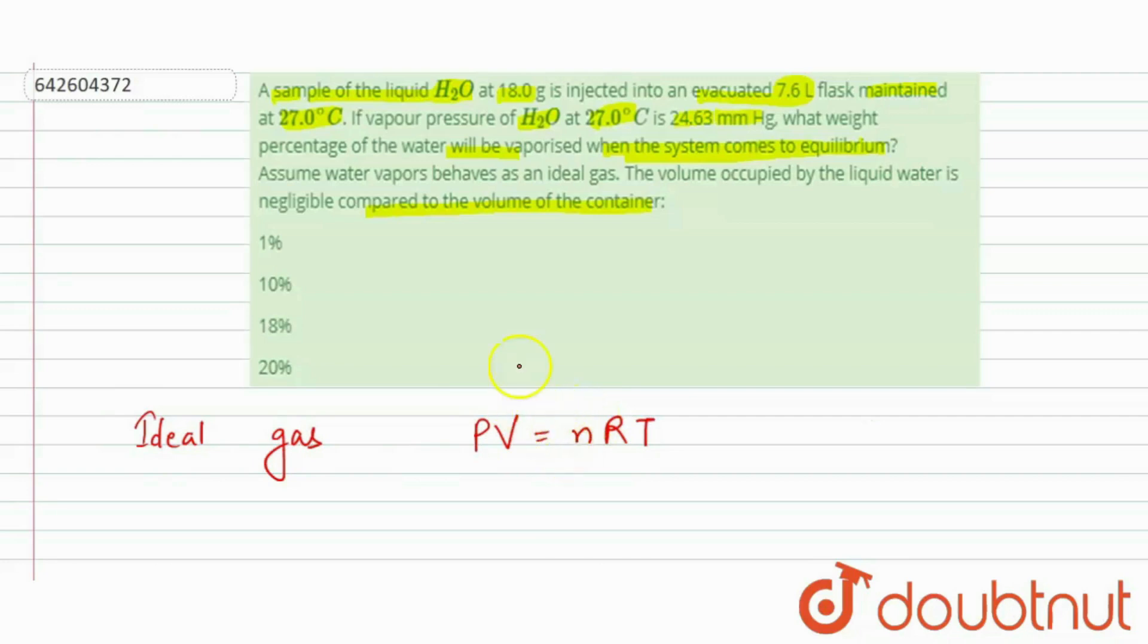24.63, but we know that 1 atm is equal to 760 mm Hg, right? So here it will be 24.63 upon 760 because we need to convert it into the atmospheric pressure that is atm.